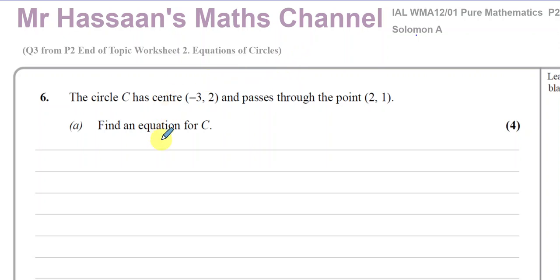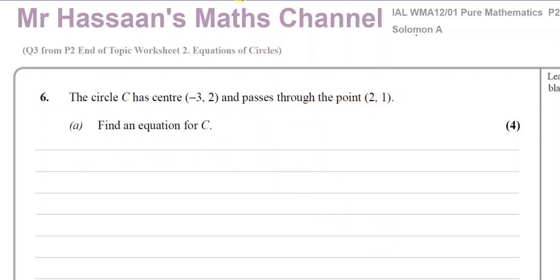The question is from coordinate geometry from P2. It says the circle C has center negative 3, 2 and passes through the point 2, 1. Find an equation for the circle C.